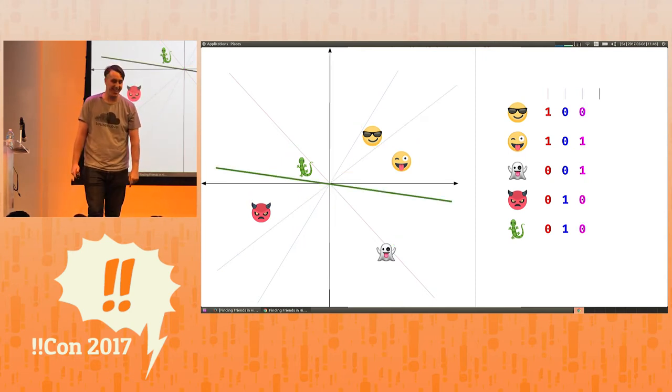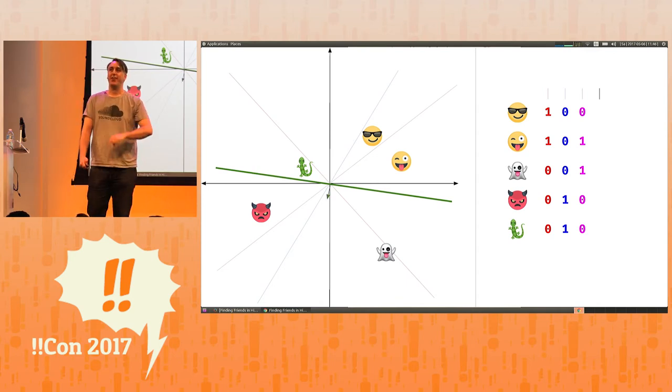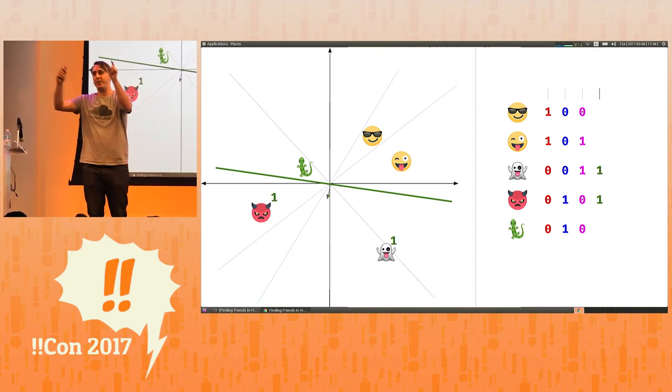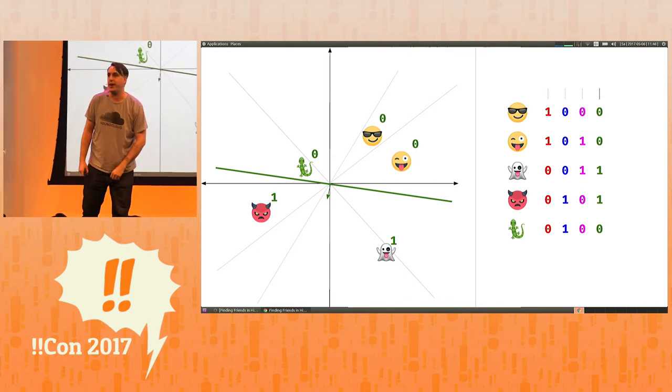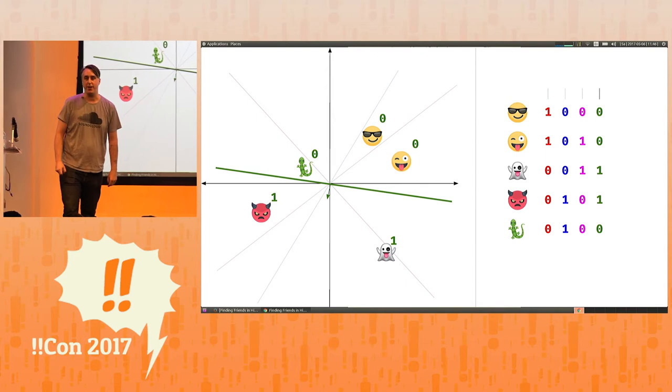Pick a random plane. Pick an orientation. Assign vectors on one side a one and vectors on the other side a zero. As you can see, we have vectors on the left-hand side and binary on the right-hand side. That is locality-sensitive hashing.